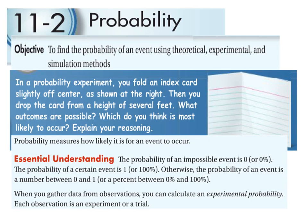When talking probability, a couple things we need to understand. First, the probability of an impossible event is 0, which would be 0%. The probability of a certain event is 1, which would be 100%. Otherwise, all probabilities have to be between 0 and 1. In a situation like the one above, when we gather data from observations, we calculate what we call an experimental probability. Each observation is an experiment or a trial.